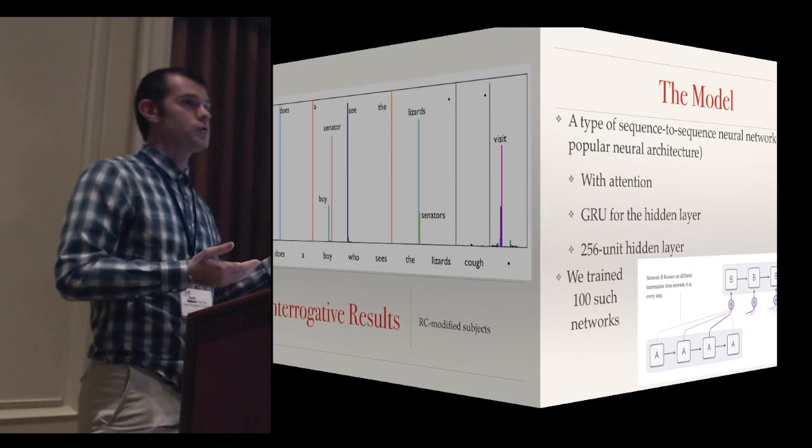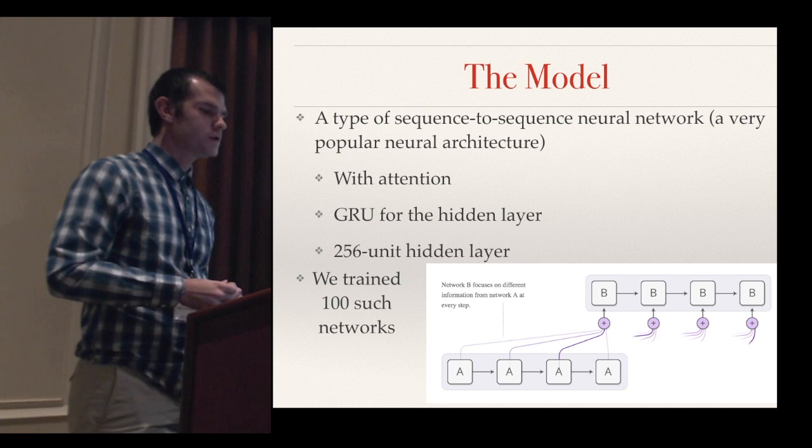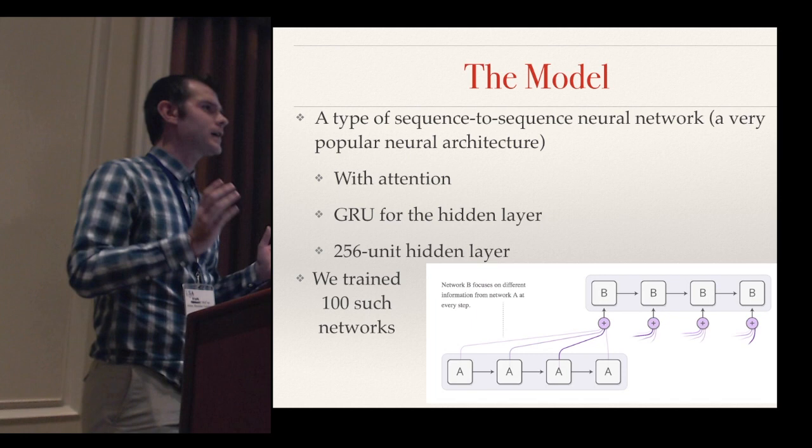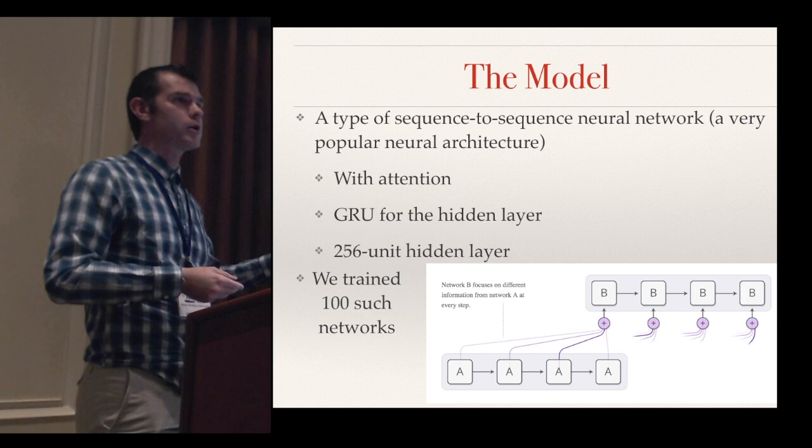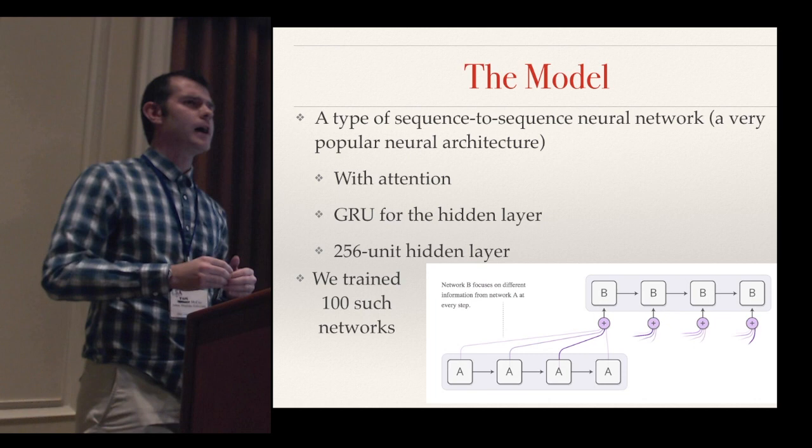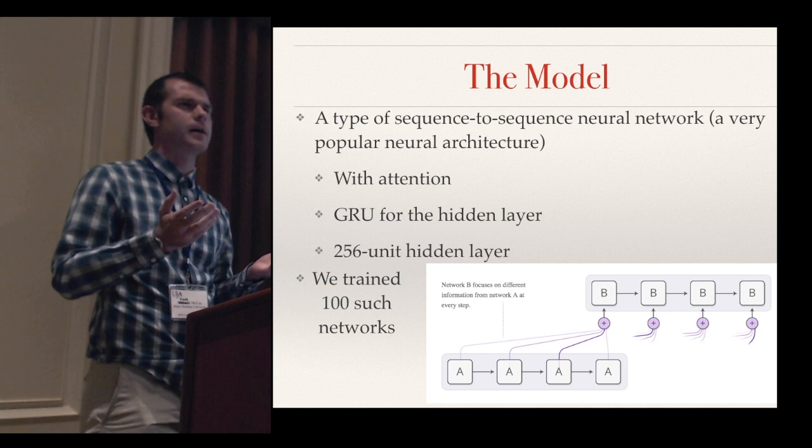The model we use is a sequence-to-sequence neural network with attention. If you're not a machine learning person, the exact details are not important, but one thing to draw your attention to is that we trained 100 different networks that all have the same architecture but differ only in their random initialization. We did this to ensure that whatever results we got were not just a fluke about one single network, but rather that they generalized properly.